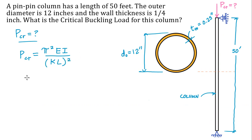And for a pin pin column like this, we can use a value of K is equal to 1.0. And once we do that, this expression simplifies into pi squared E I over L squared. And you can use that equation for any column, provided that you're dealing with an idealized pin pin connection.